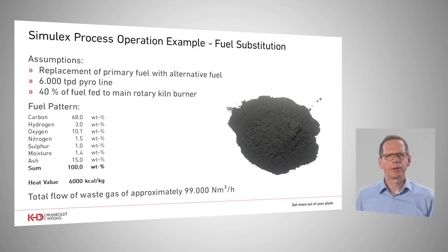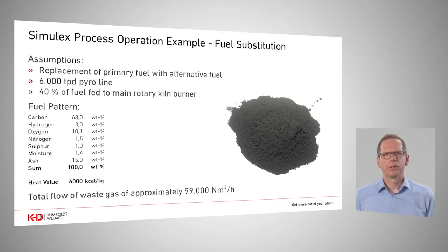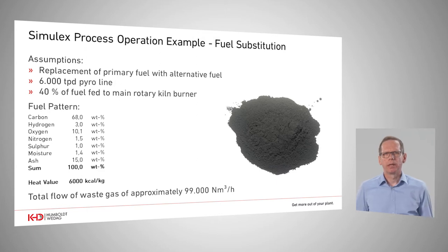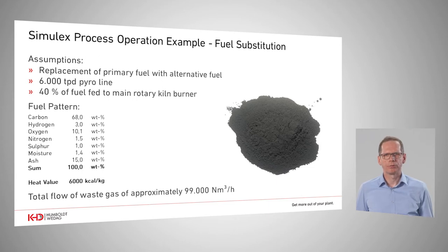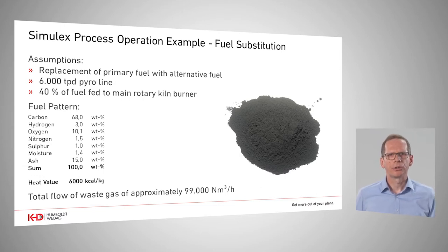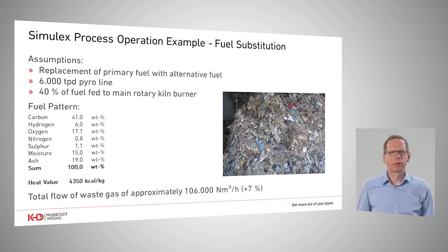Let me show you with an everyday example how Simulex can help you and your plant operators. The substitution of primary fuels with alternative options is a typical scenario in today's cement production. Such a change in fuel has a significant impact on the pyro system and its operation. Let us assume a 6,000 tons per day production line with 40% of fuel intake at the kiln main burner. Given the fuel composition as shown on this slide, we would have a waste gas flow of almost 100,000 normal cubic meters per hour in the kiln. Now let us assume the same production premises plus the replacement of all primary fuels fed to the main burner.